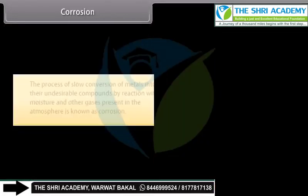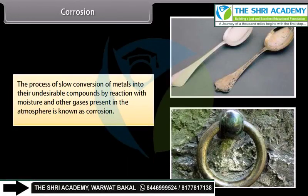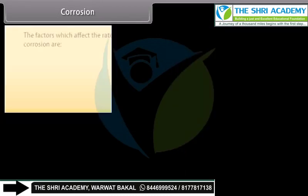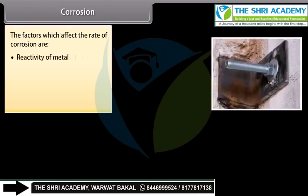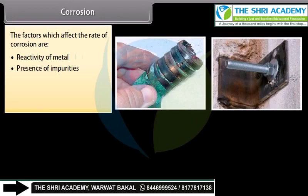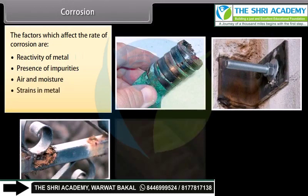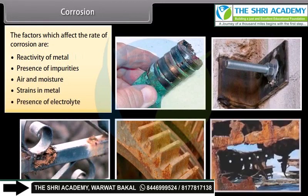Corrosion is the process of slow conversion of metals into their undesirable compounds by reaction with moisture and other gases present in the atmosphere. For example, silver gets tarnished, iron rusts, copper develops a green coating on its surface, and lead loses its luster. The factors which affect the rate of corrosion are: reactivity of metal, presence of impurities, air and moisture, strains in metal, and presence of electrolyte.